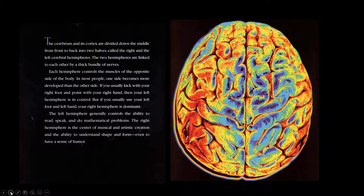The cerebrum and its cortex are divided down the middle from front to back into two halves, called the right and the left cerebral hemispheres. The two hemispheres are linked to each other by a thick bundle of nerves. Each hemisphere controls the muscles of the opposite side of the body. In most people, one side becomes more developed than the other side. If you usually kick with your right foot and point with your right hand, then your left hemisphere is in control. But if you usually use your left foot and left hand, your right hemisphere is dominant.